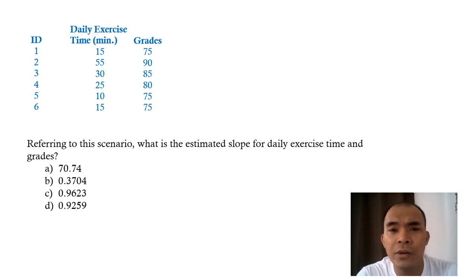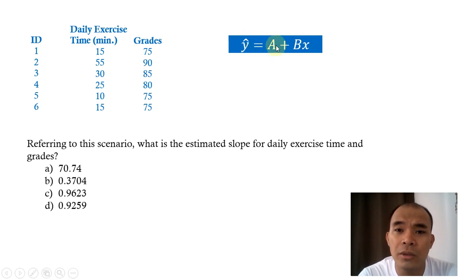Remember guys, in our equation, y is equal to a plus bx. In the formula in our algebra, we remember that y is equal to mx plus b, where our m is the slope. In other words, the b here is our slope.